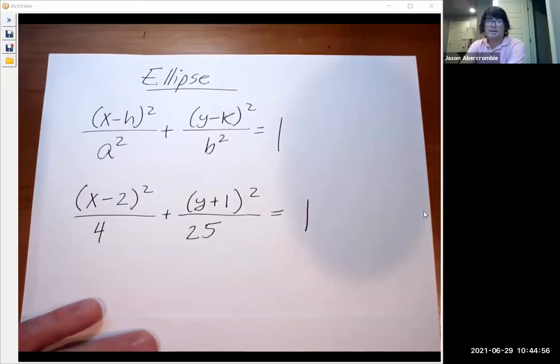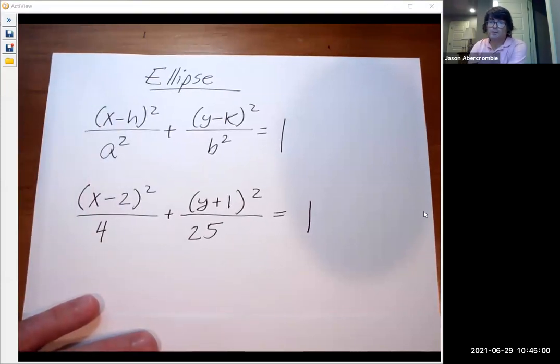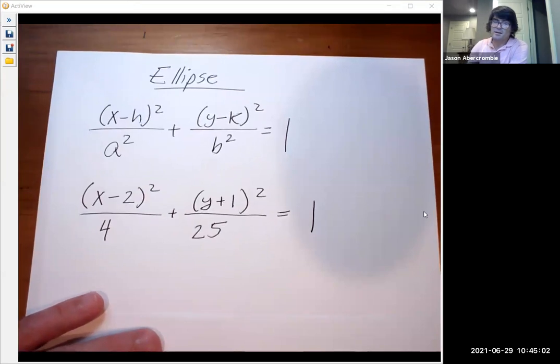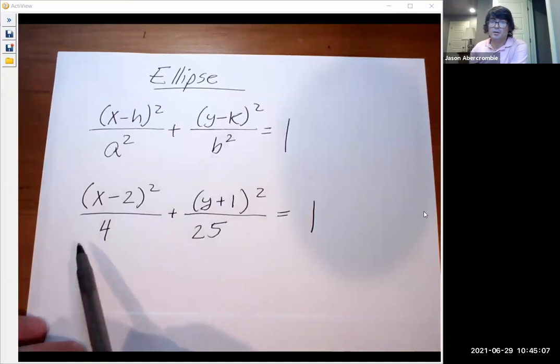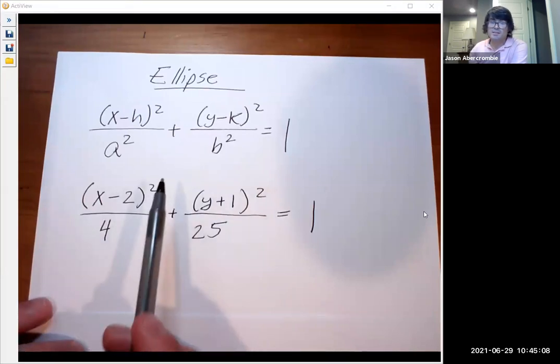Hi guys, in this video we're going to be talking about the ellipse. This is one of the four conic sections. What I've done here is I've written out the general formula for an ellipse, and then I've written out an actual problem. We're going to identify the parts here and then graph this example.